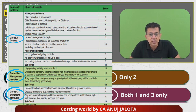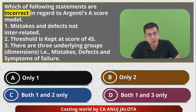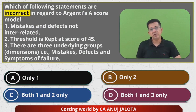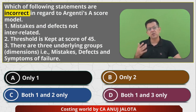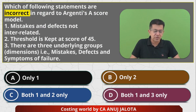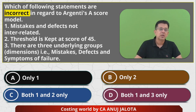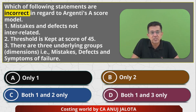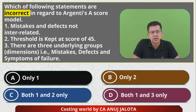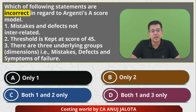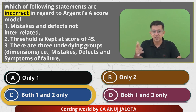Coming back to the question: statement one says mistakes and defects are not interrelated — that is incorrect, because they are interrelated. Statement two says the threshold is kept at 45 — that is also incorrect, as it is kept at 25, with individual thresholds of 10, 15, and 0. Statement three says there are three underlying groups — mistakes, defects, and symptoms of failure — that is correct. So both one and two are wrong, making the answer option C.